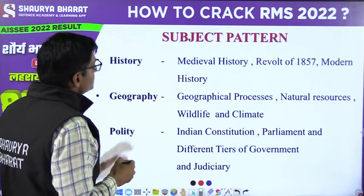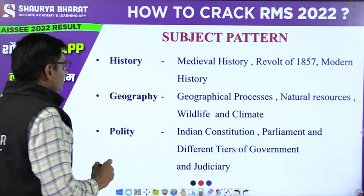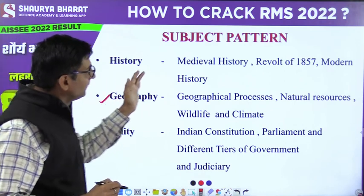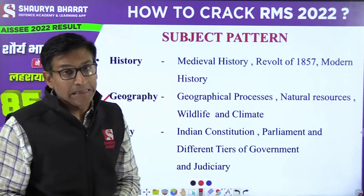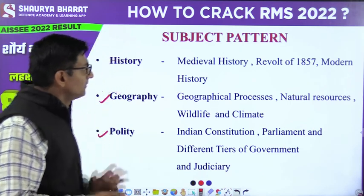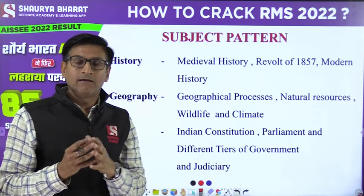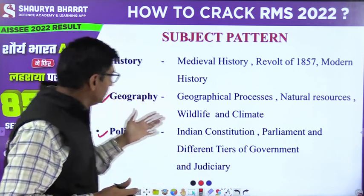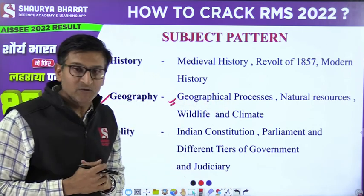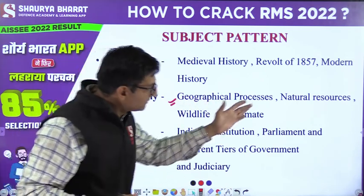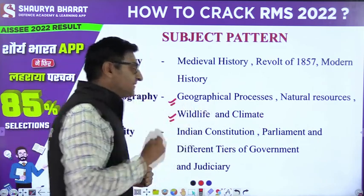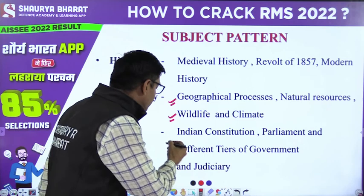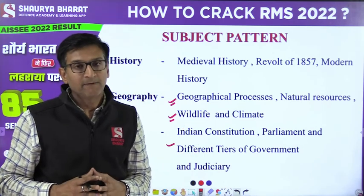Next, the subject pattern. First, history, then geography, and polity. History is divided into medieval history, the Revolt of 1857, and modern history. In the case of geography: geographical processes, that is earth processes — endogenetic and exogenetic forces — natural resources, wildlife, climatic pattern, etc. And polity contains Indian constitution, parliament, different tiers of government, and also a very important part: the judiciary.